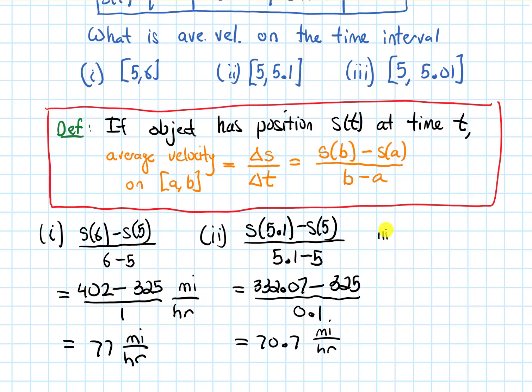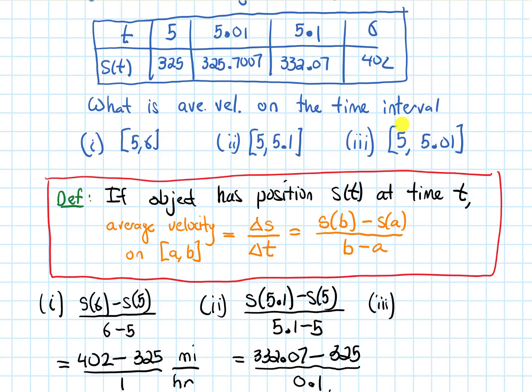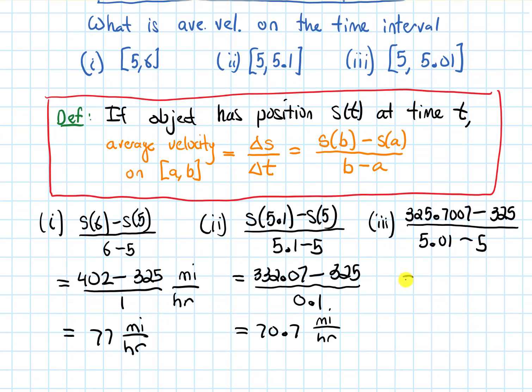Let's do it now on the third part, this third time interval. Okay, so for this one, I'm going to do the position at 5.01. I'm going to jump straight to 325.7007 minus the initial position, 325 over the change in time, which will be 5.01 minus five. And working out what that is, we get 70.07 miles per hour.